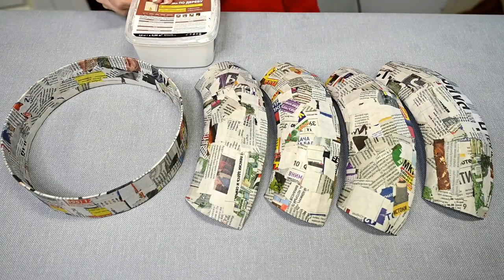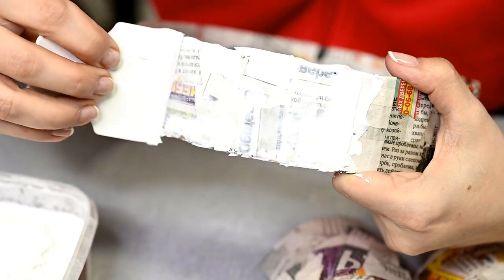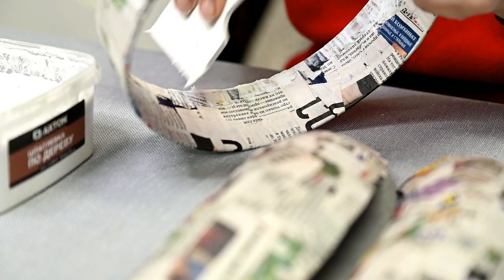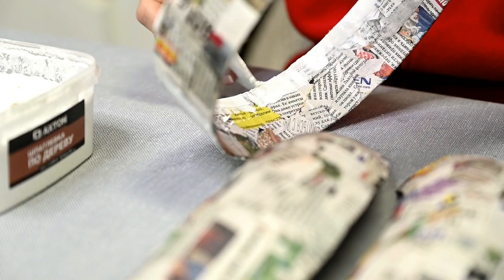After the base has dried, to make the surface smoother, I'm taking wood putty and applying it in a very thin layer. I'm using a plastic spatula. It's soft and follows the donut's relief really well.